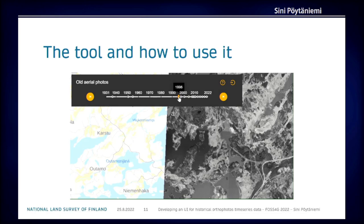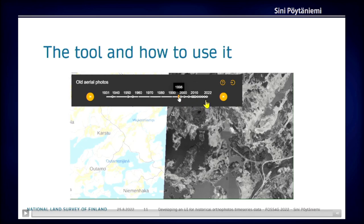This is part of the end result. You can see that when the user has selected a certain bounding box, the time scale here is updated automatically. It shows only the images available in that area — one image from the 1930s, the next couple from the 1950s.